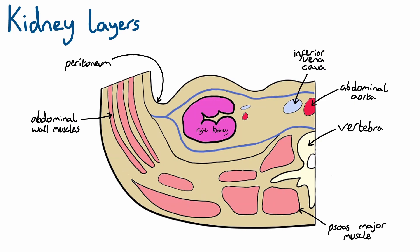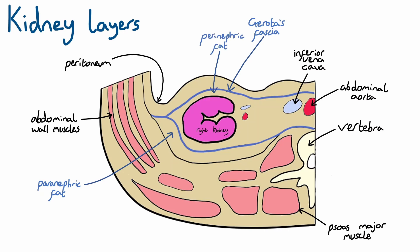The outermost layer of the kidney, though mainly found on the posterior surface, is perinephric fat. The next lining is Gerota's fascia, which is a lining of connective tissue that holds the kidneys in place, as well as holding in the next lining, the perinephric fat. The perinephric fat is thought to have shock absorbing properties for kidney protection. The inner lining is the renal capsule, a tough fibrous layer.